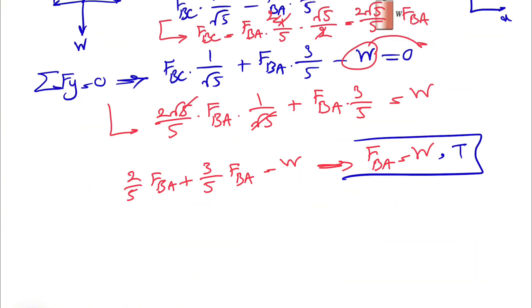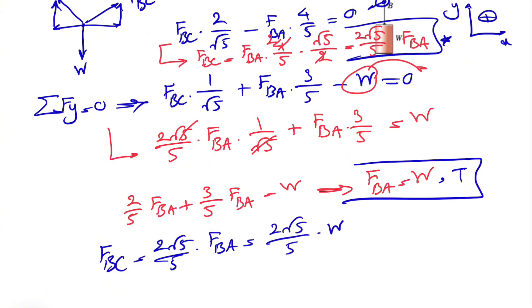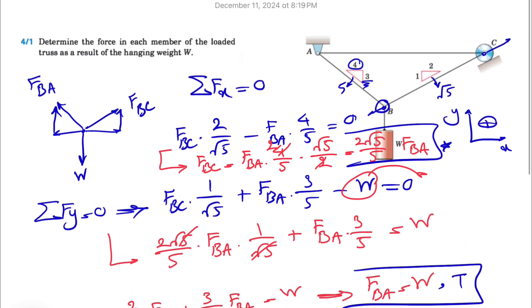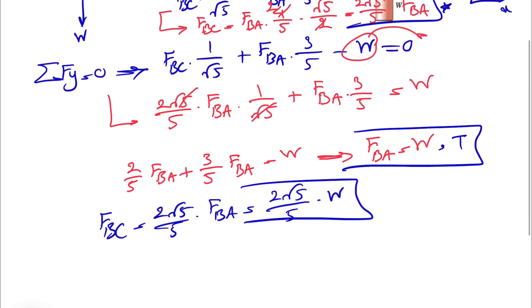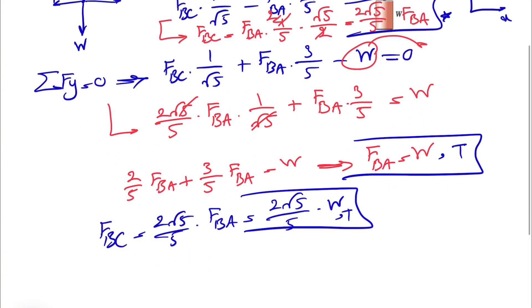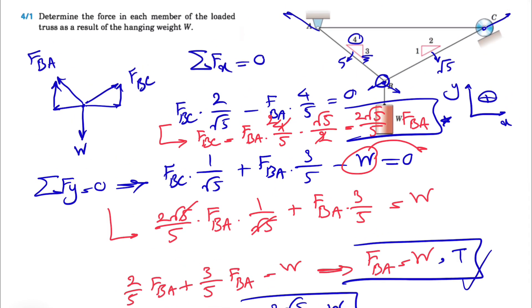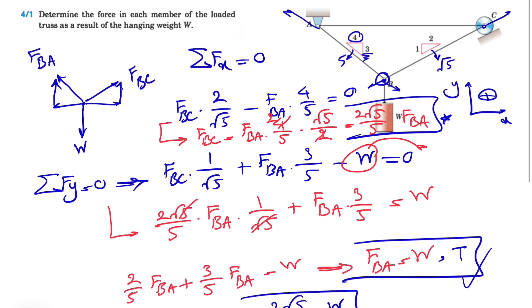Now that we have FBA, it's easy to find FBC. FBC = (2√5/5) · FBA = (2√5/5) · W. Again, no negative sign, so FBC is also in the direction we assumed — meaning FBC is in tension as well. So both BA and BC are in tension.